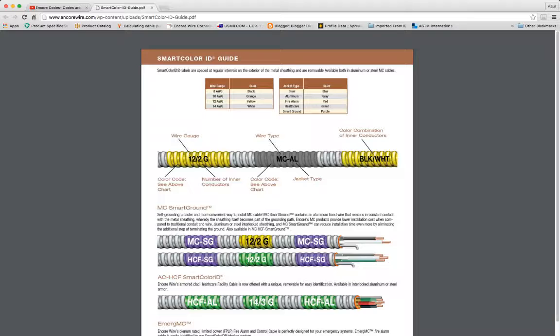So it's a 12-2. It's got a black and a white and a ground. Now the ground in most of these branch circuit type cables are going to be green. The code allowed, the National Electrical Code in 250.118, allows the equipment grounding conductor to be bare, covered, or insulated.